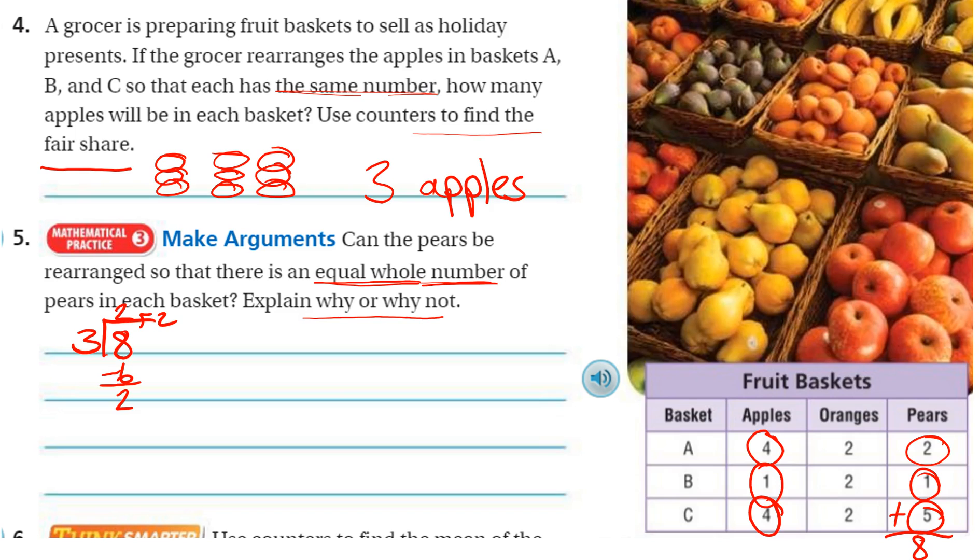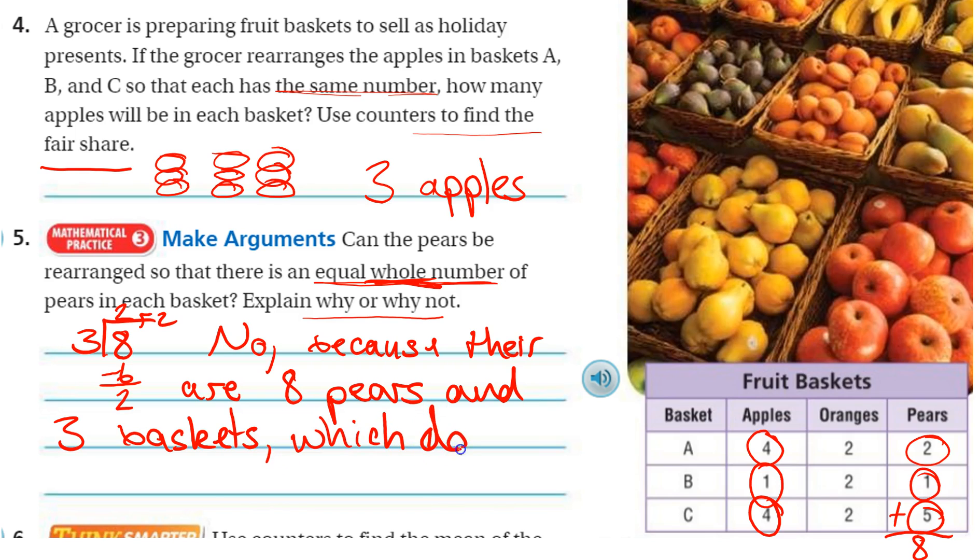So we don't want any remainder or decimal. We only want whole numbers. So no, because there are, let me write it up here. There are eight pears and three baskets, three baskets, which do not divide evenly.